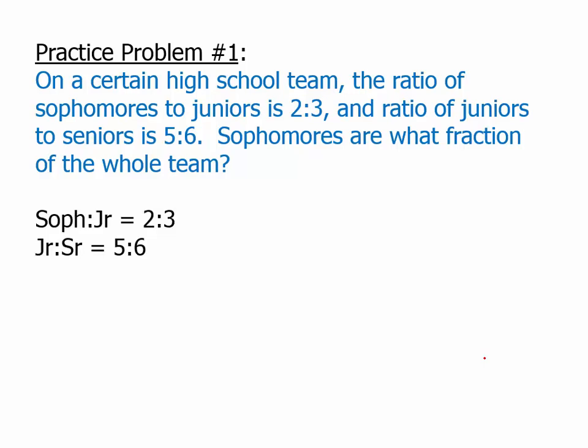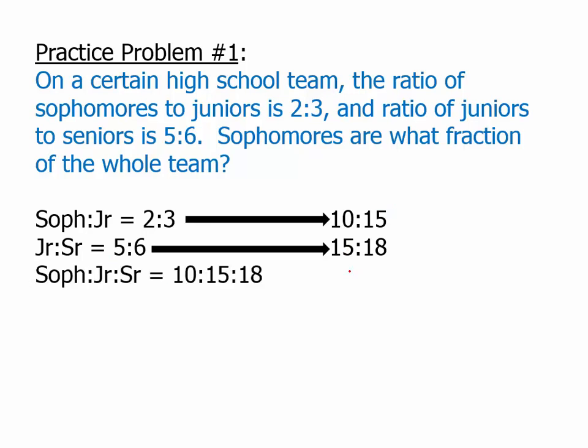So, right now, we have two ratios, sophomores to juniors, juniors to seniors. Obviously, juniors are the common element. And so, we'd like to find equivalents so that the 3 in the first ratio, and the 5 in the second ratio are the same. And, of course, the easiest way to do this would be to multiply the first ratio by 5 over 5, multiply the second ratio by 3 over 3. Then, we get these equivalent fractions. Juniors are now represented in both by 15, so now we can put everything together in one big ratio. Sophomores to juniors to seniors, 10 to 15 to 18. Now, that's a ratio. It looks like you might be able to cancel something, but there's actually no way to reduce that. There's no number that is a common factor of all three of those numbers. And so, that is our combined ratio.